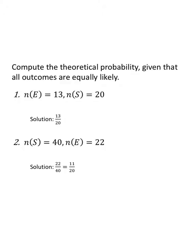Compute the theoretical probability given that all outcomes are equally likely. If n(E) equals 13 and n(S) equals 20, our probability of E is 13 divided by 20. Don't overthink it.